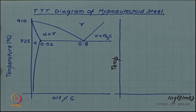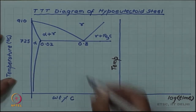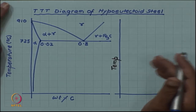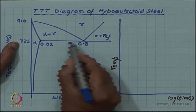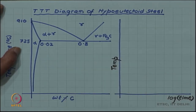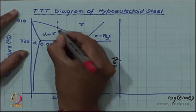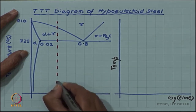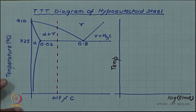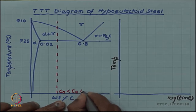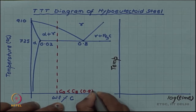Recall that in the iron-carbon phase diagram, 0.8 weight percent carbon steel is the eutectoid steel, which is what we have been considering till now. Any alloy with composition less than 0.8 weight percent is considered to be hypo-eutectoid steel. Suppose we take a composition less than 0.8; that composition C₀ is less than the eutectoid composition Cₑ, which is 0.8 weight percent carbon.